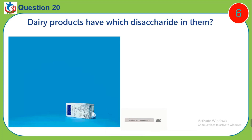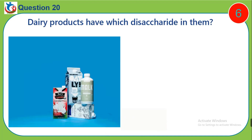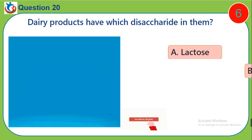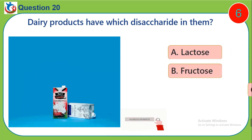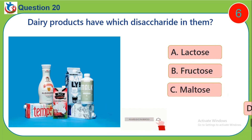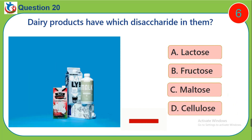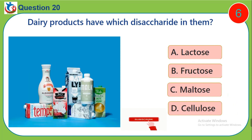Question 20. Dairy products have which disaccharide in them? A. Lactose, B. Fructose, C. Maltose, D. Cellulose.